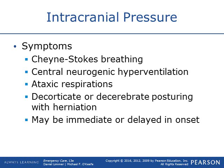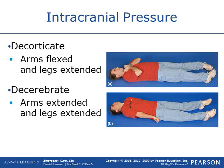There can also be posturing. Decorticate posturing is where all the limbs turn toward the core — arms and legs flex. Decerebrate posturing is where the arms and legs are extending outward. Decerebrate is the last stage; if a person is decerebrate posturing, that's worse than decorticate. The next movement after that will be flaccid and death.